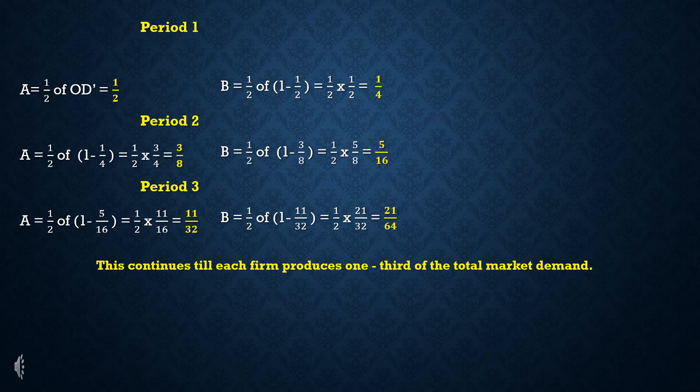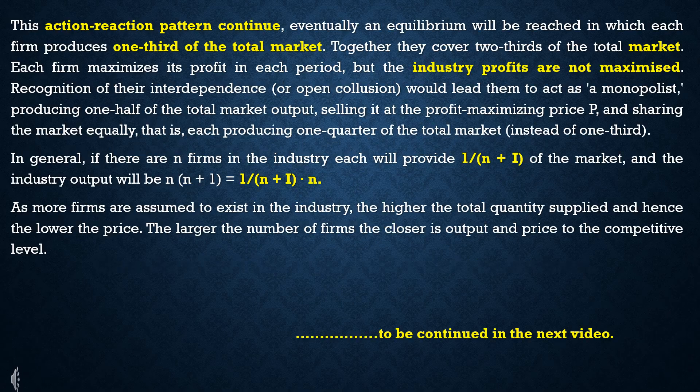This action-reaction pattern continues until each firm produces one-third (1/3) of the total market. Together, both firms supply two-thirds (2/3) of the total market. This is the Cournot equilibrium.